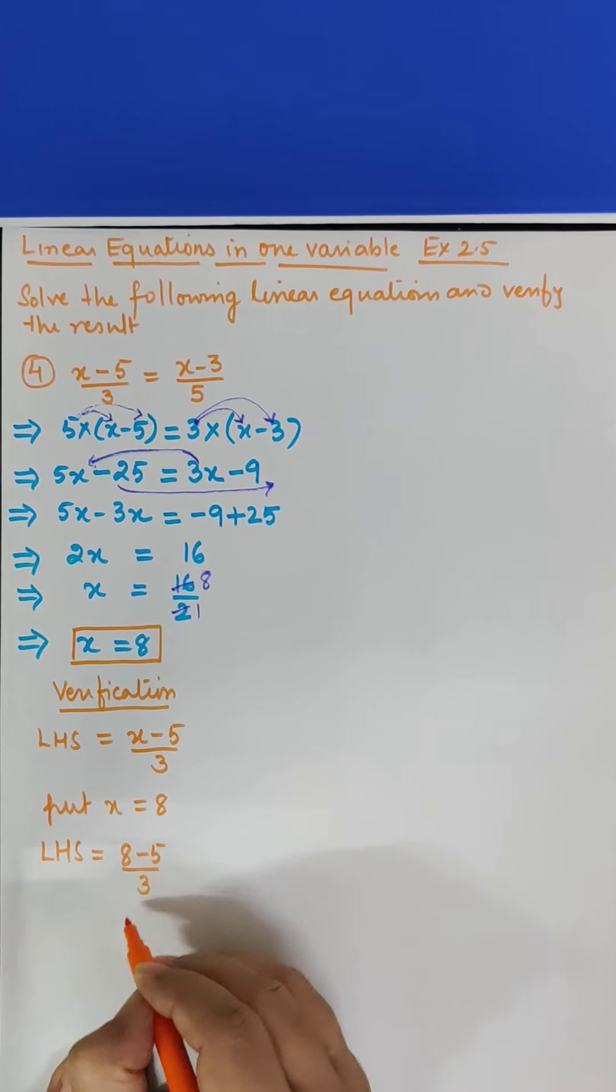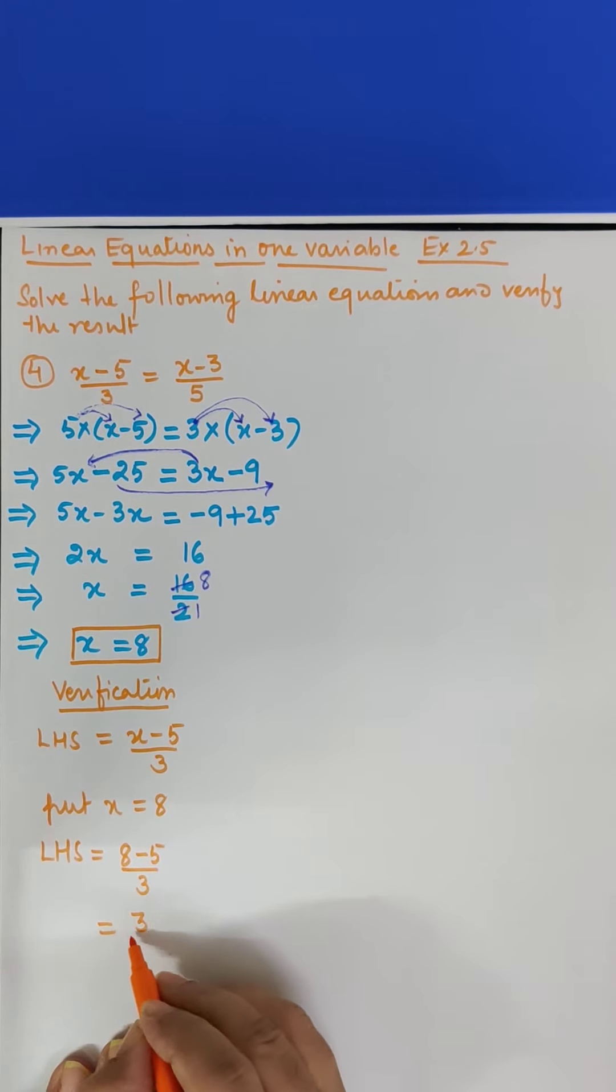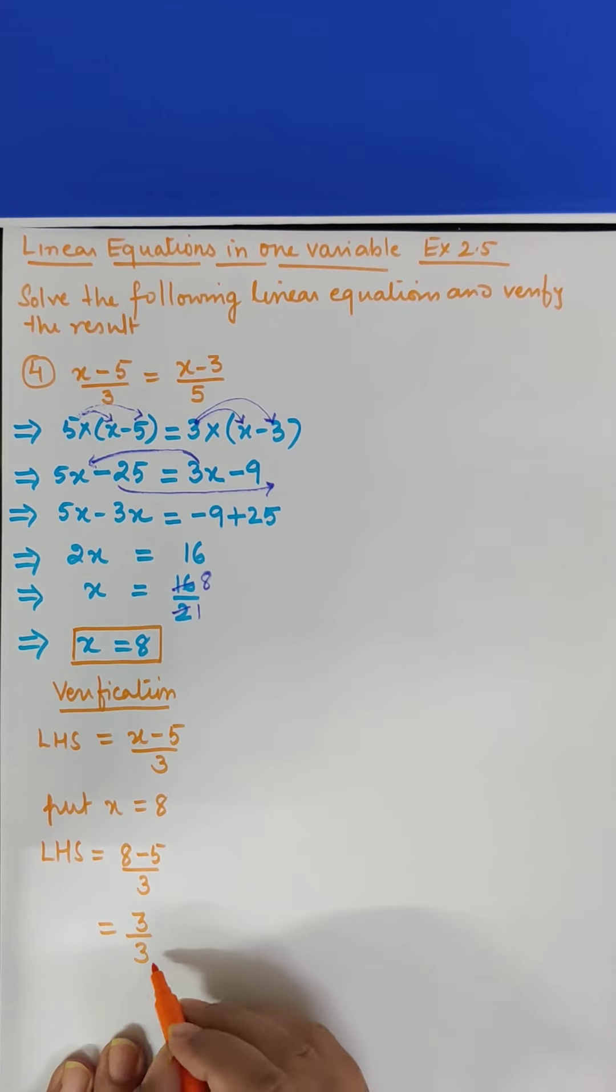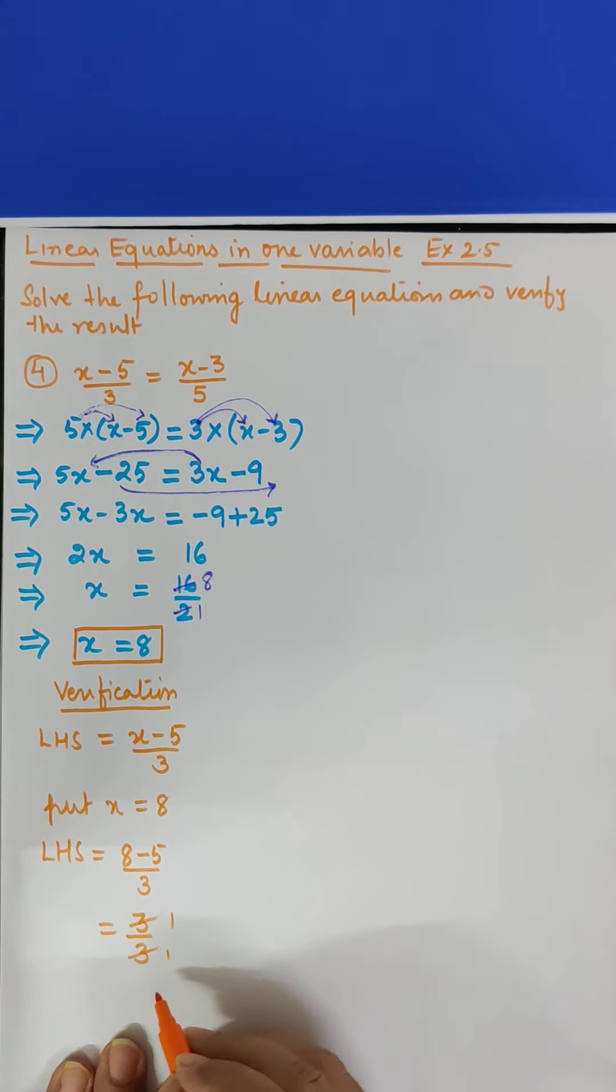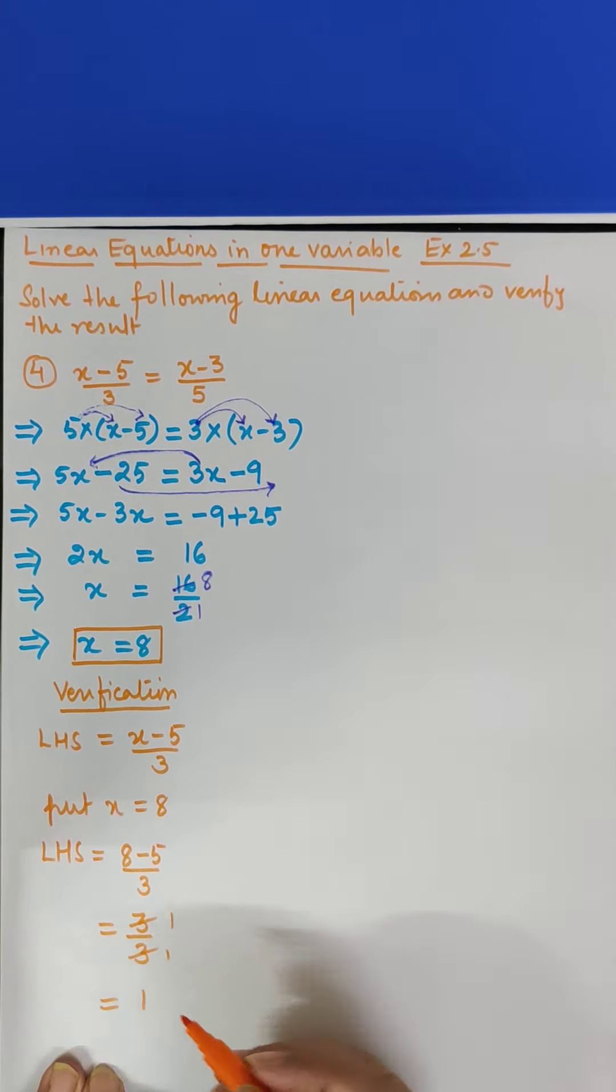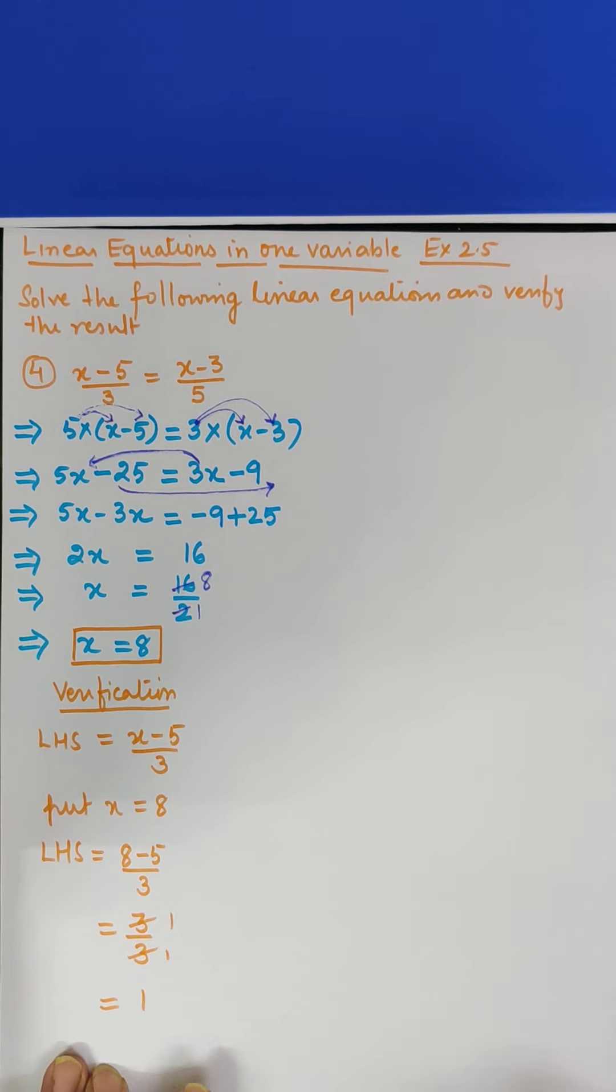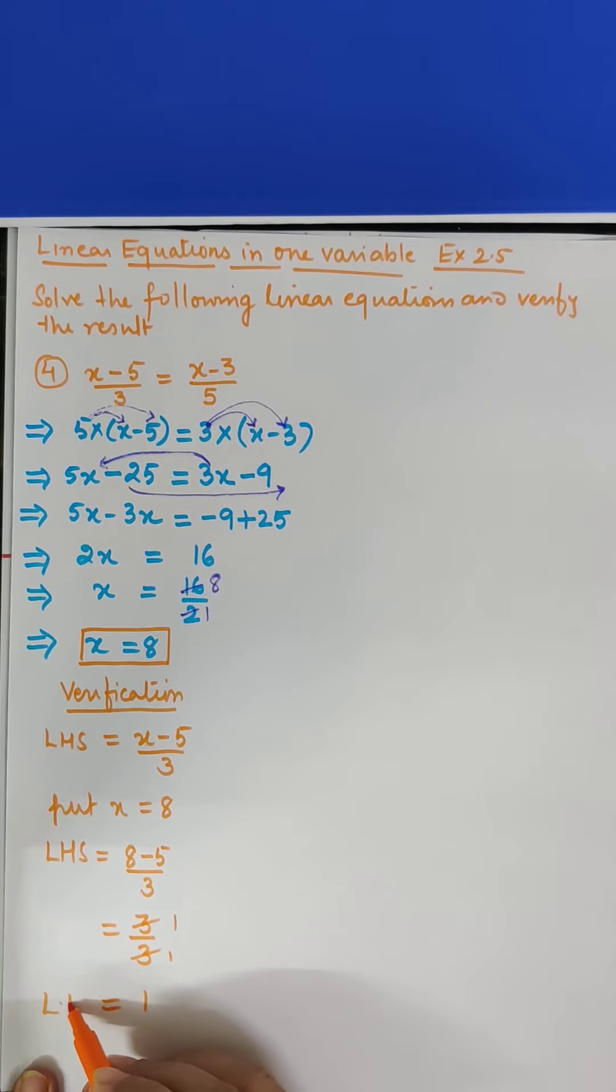8 minus 5 upon 3. 8 minus 5 kya hota hai 3 upon 3 and 3 upon 3 is what. 1, 1 upon 1 is 1. To iska matlab hamara jo LHS hai, LHS is 1.